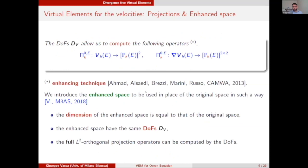Regarding computability of the projections: our functions are not known in explicit form — they are defined implicitly. So in standard VEM setting we need to introduce polynomial projections. With our degrees of freedom, we are able to compute the polynomial projection onto polynomials of degree k and also onto the tensor polynomials of degree k of the gradient of our discrete function. I am using the so-called enhancing technique introduced in an earlier paper; I avoided spelling out the full construction of the enhanced space for the Stokes equation, but it follows the ideas introduced in that paper.